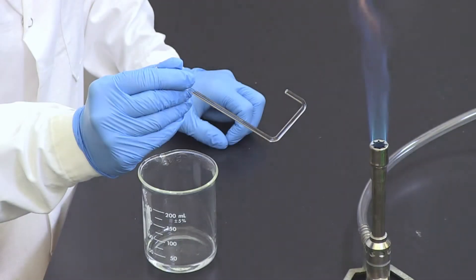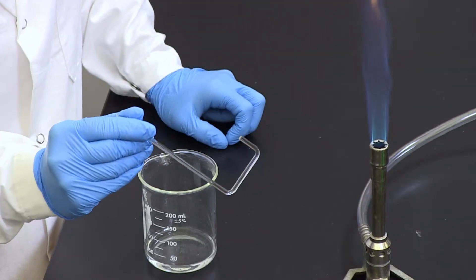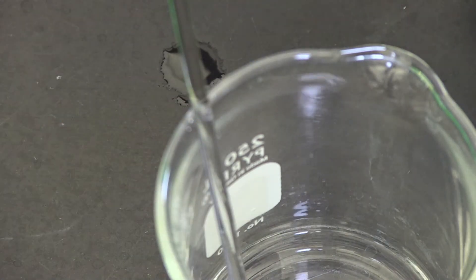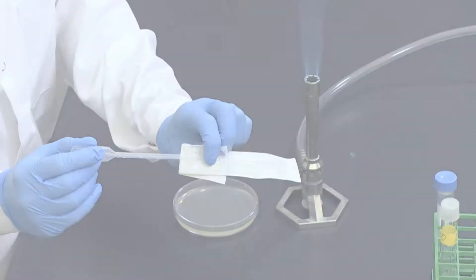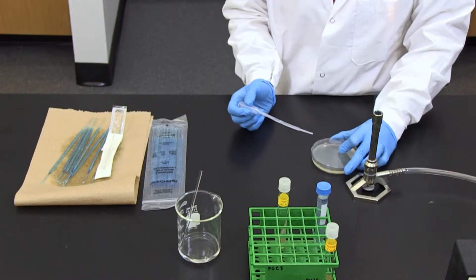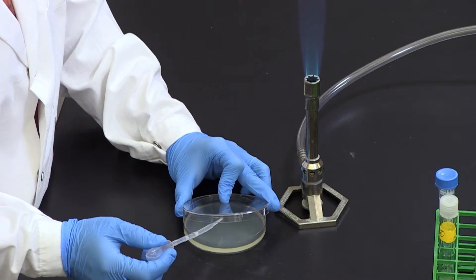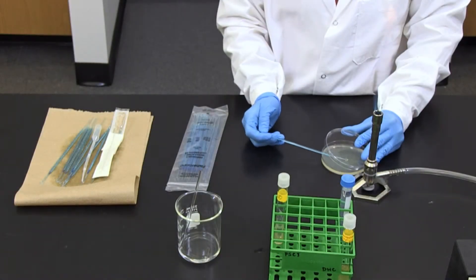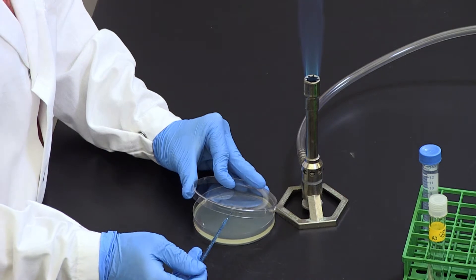To use the spread plate method: First, place the glass cell spreader in a 95% ethanol beaker. Second, with a sterile transfer pipette, place one drop of sterile water on the center of an agar plate, followed by a sterile inoculating loop full of microbes from a mixed culture and replace the lid.